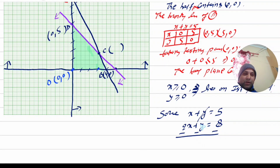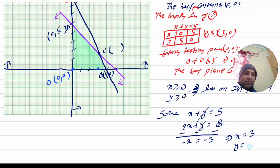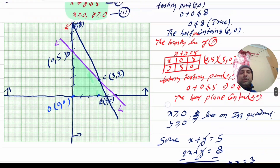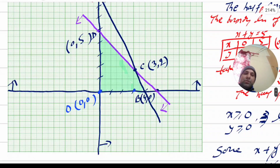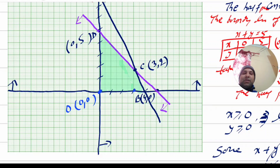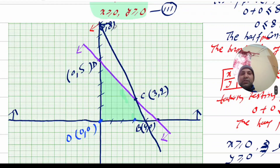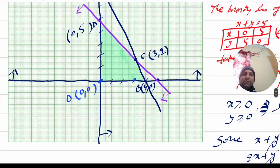Subtracting the equations, x cancels giving minus x equals minus 3, so x equals 3, and y equals 2. The intersection point is (3, 2). So the corner points of the shaded feasible region are (0, 0), (4, 0), (3, 2), and (0, 5).